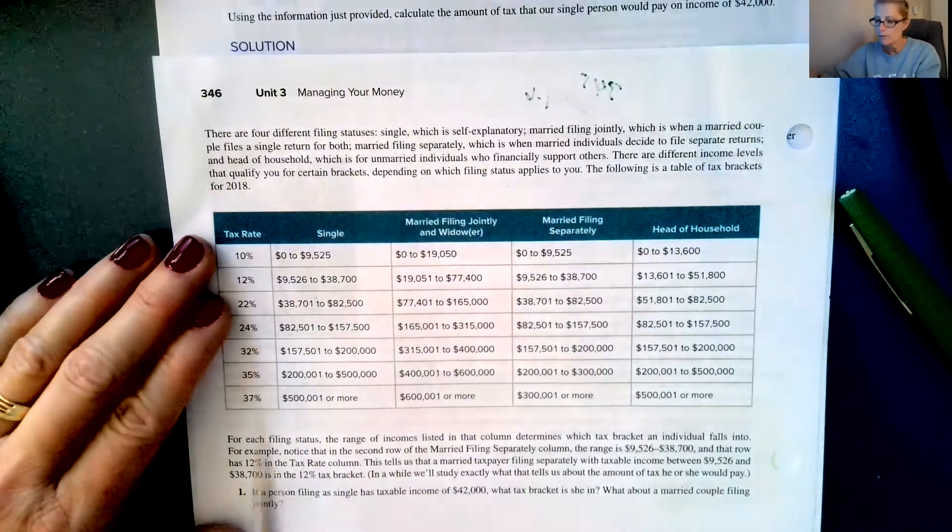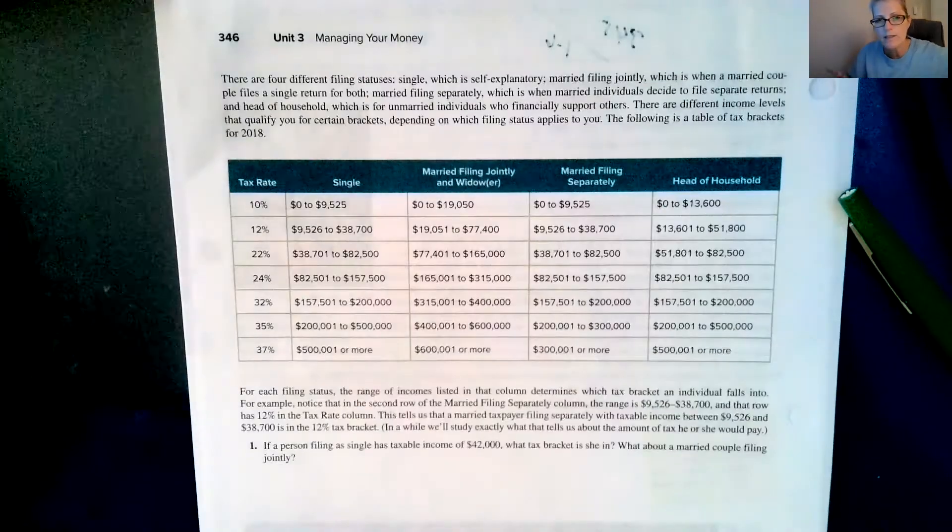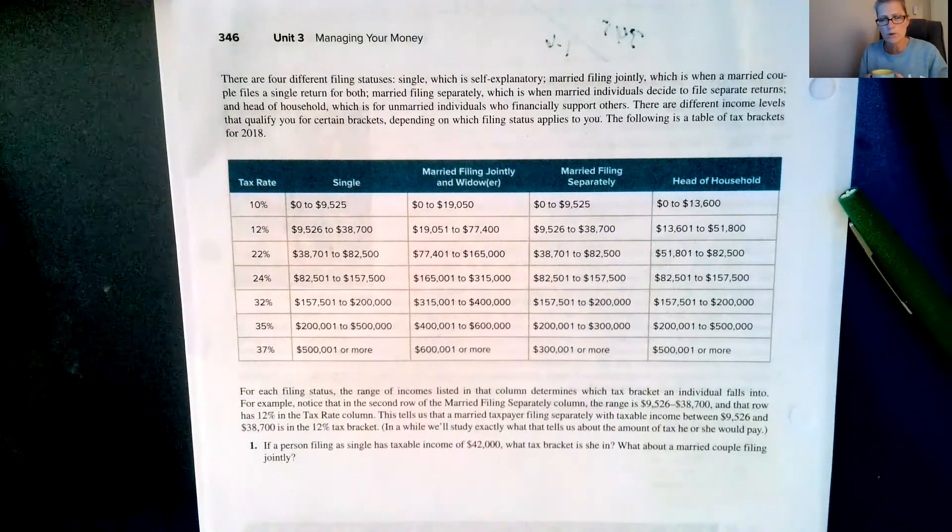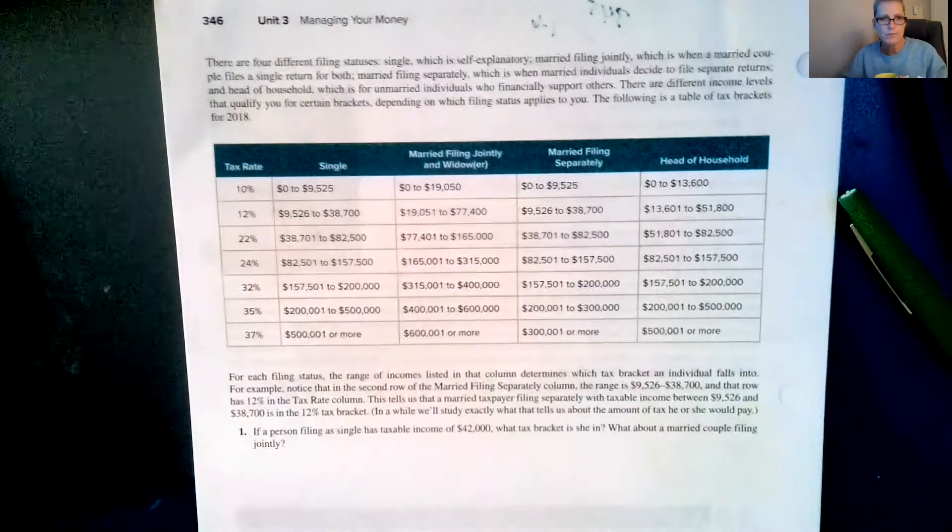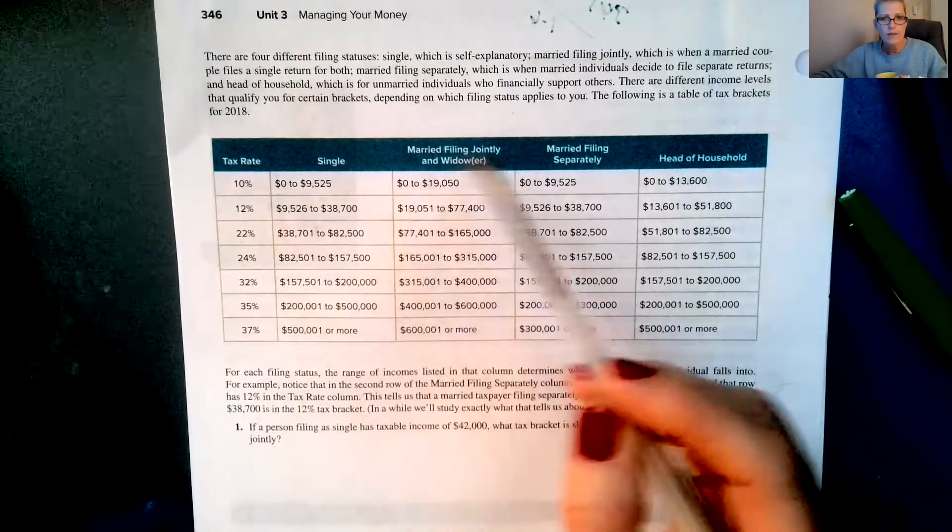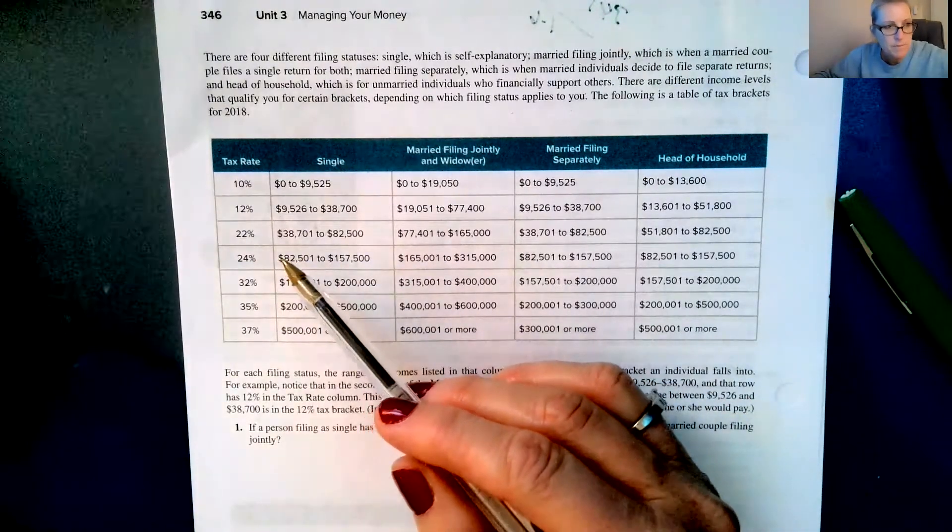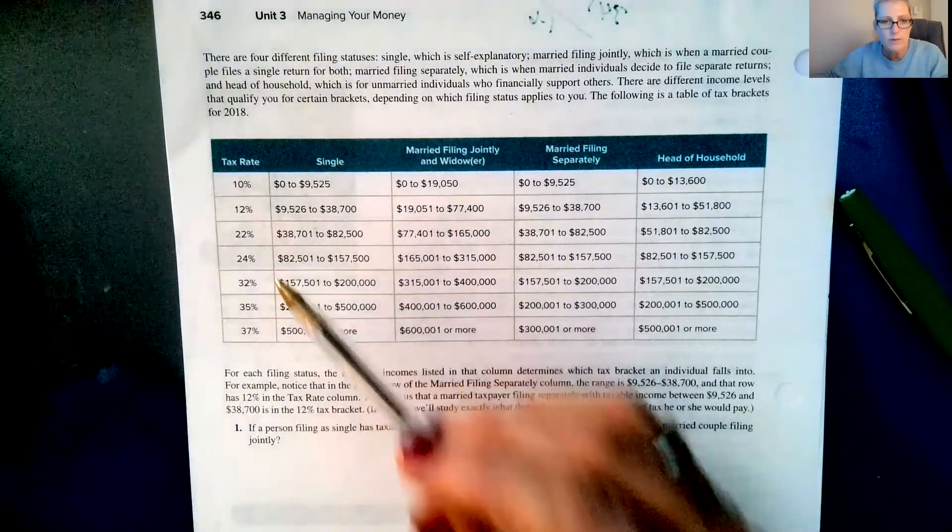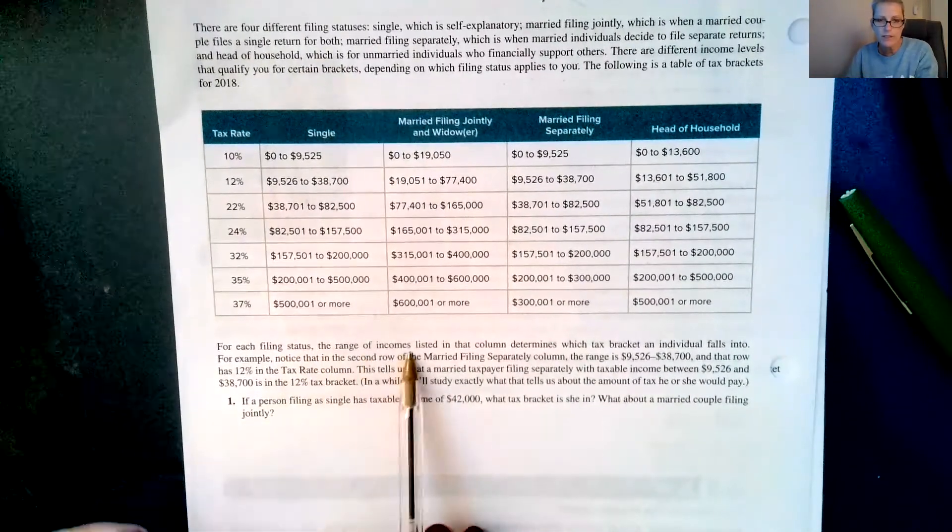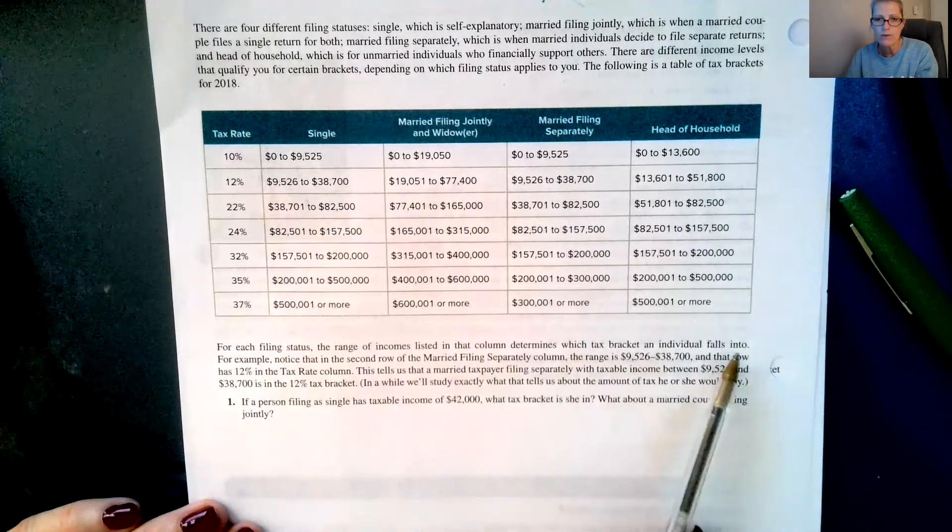There are different income levels that qualify you for certain brackets depending on which filing status applies to you. The following is a tax table from 2018. The worksheet that you're going to work on to practice this idea is more current, 2021 I believe. So here are the different tax rates and here are the four different ways that you can file for your taxes.